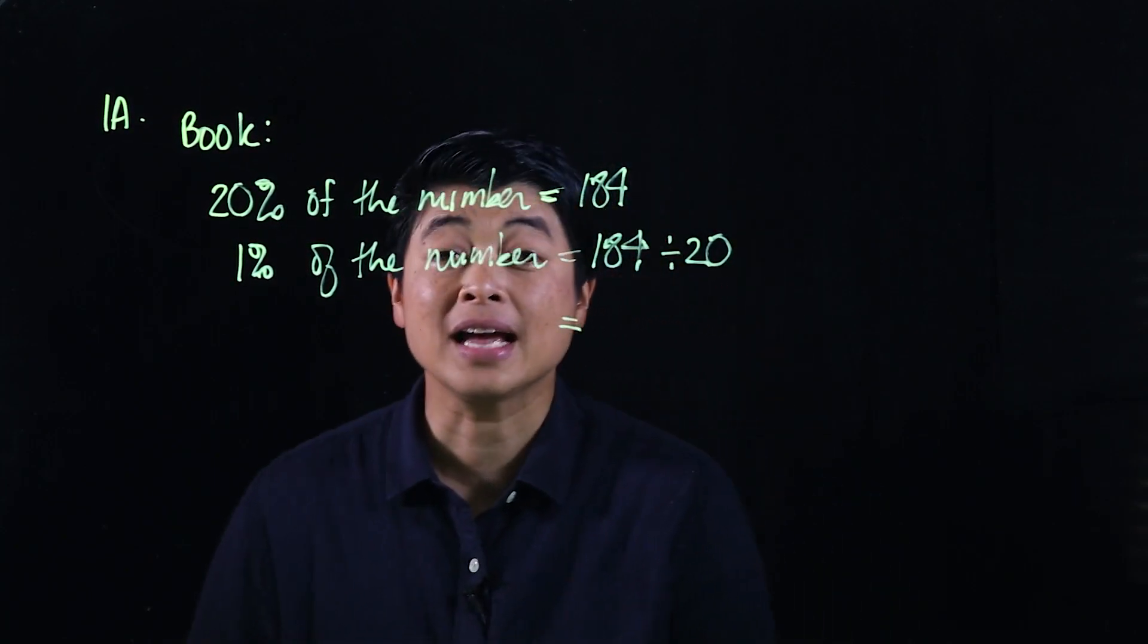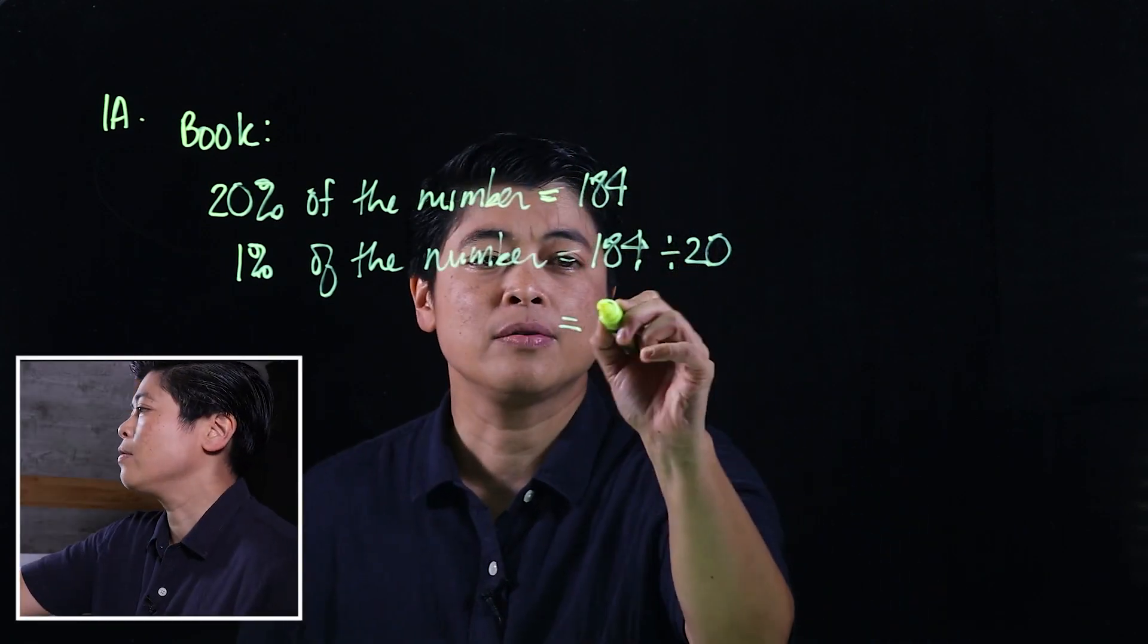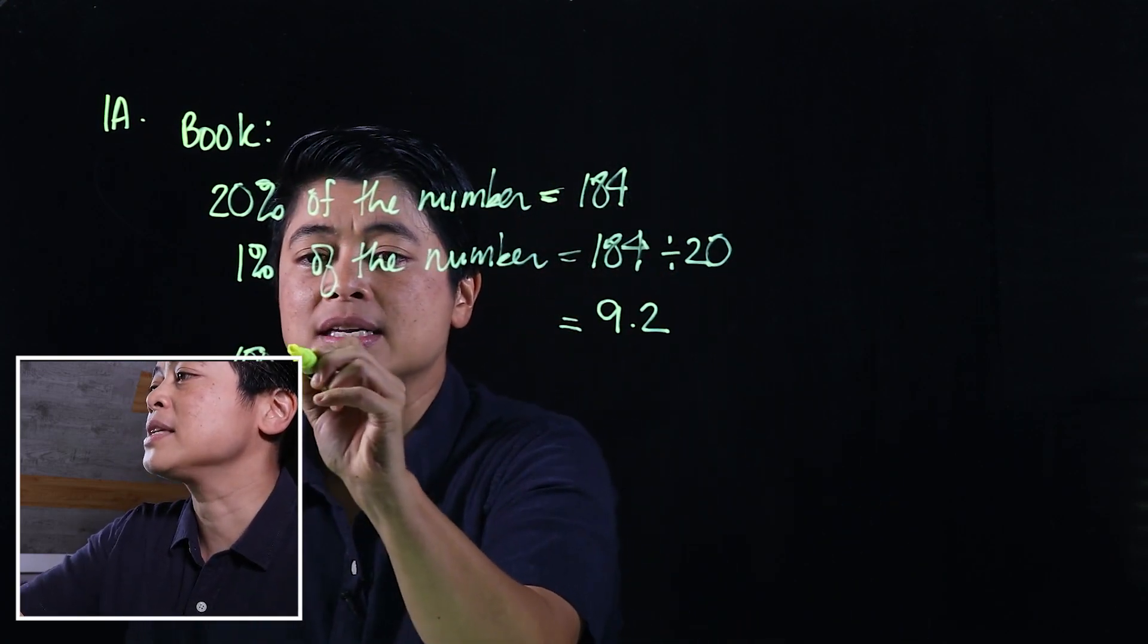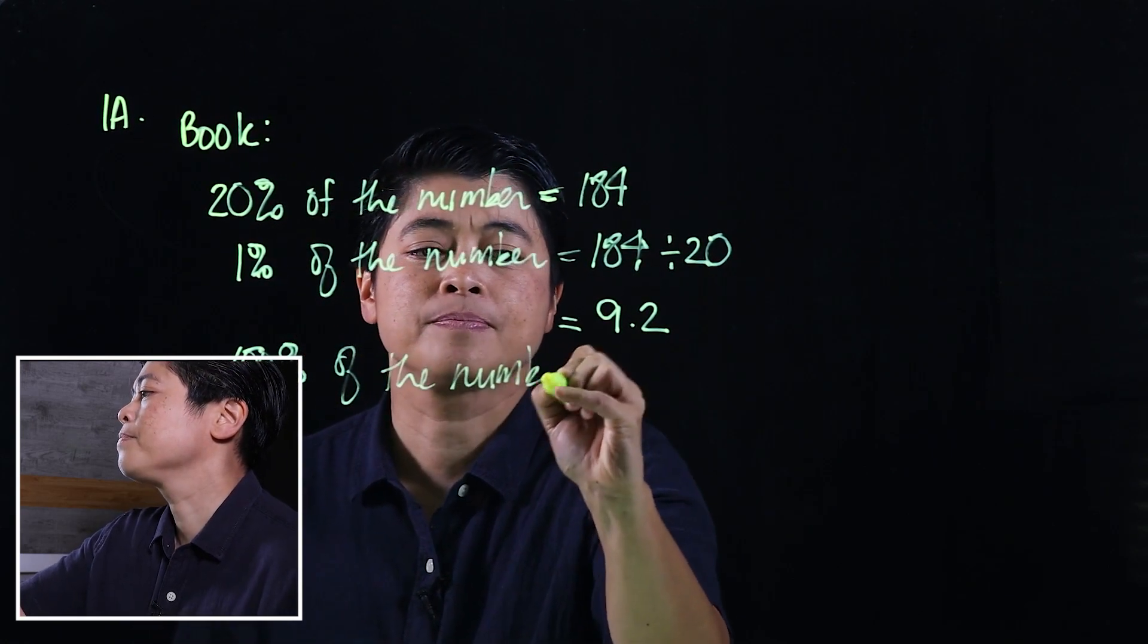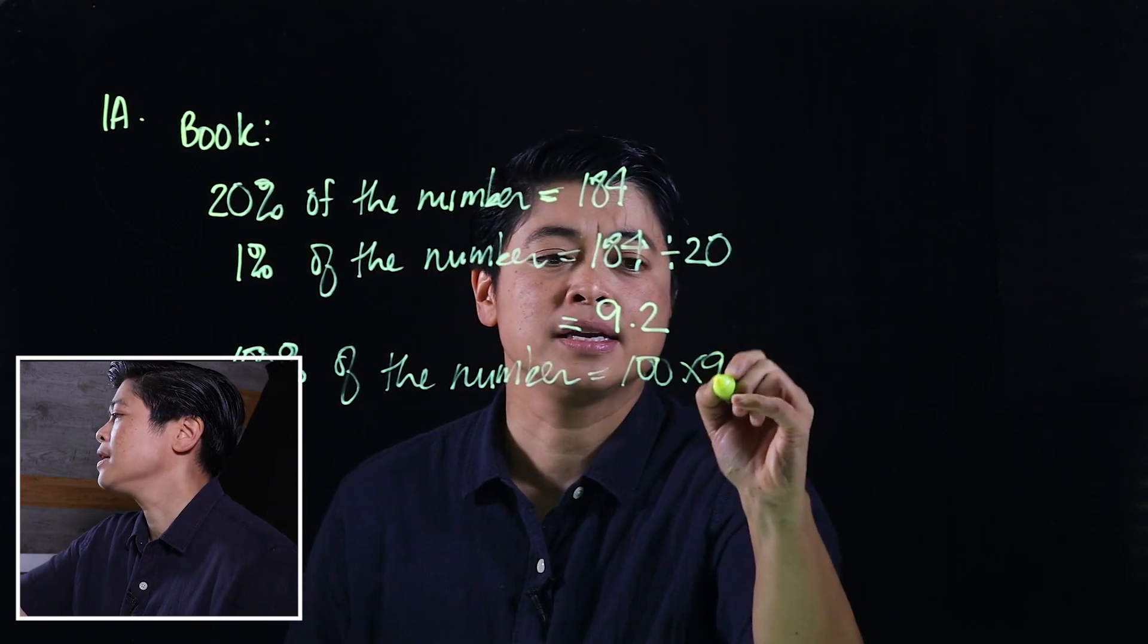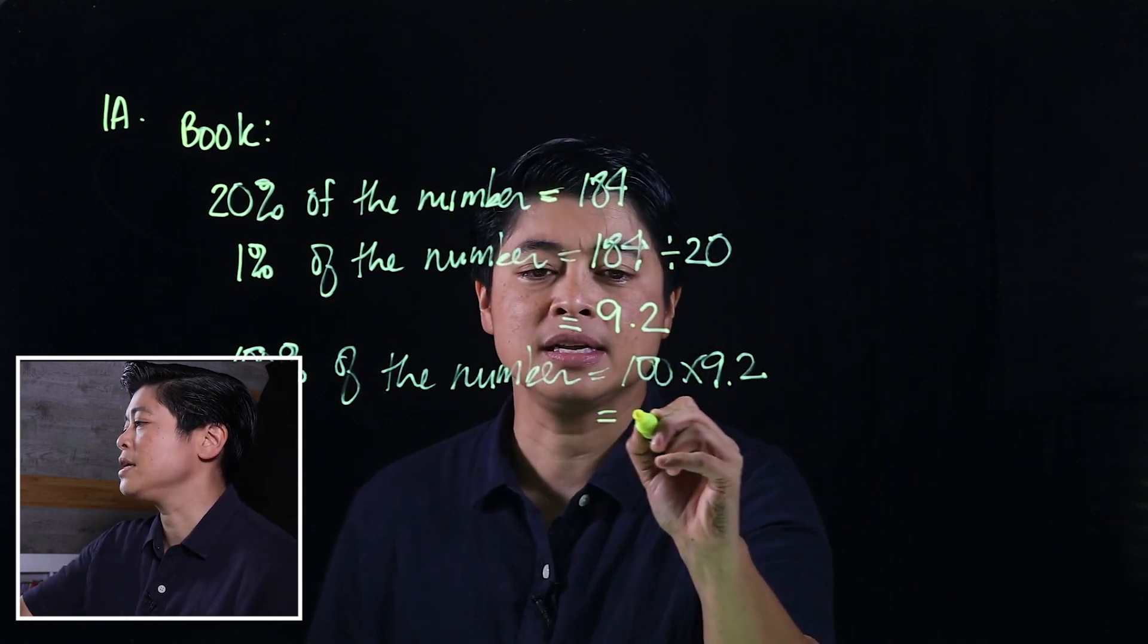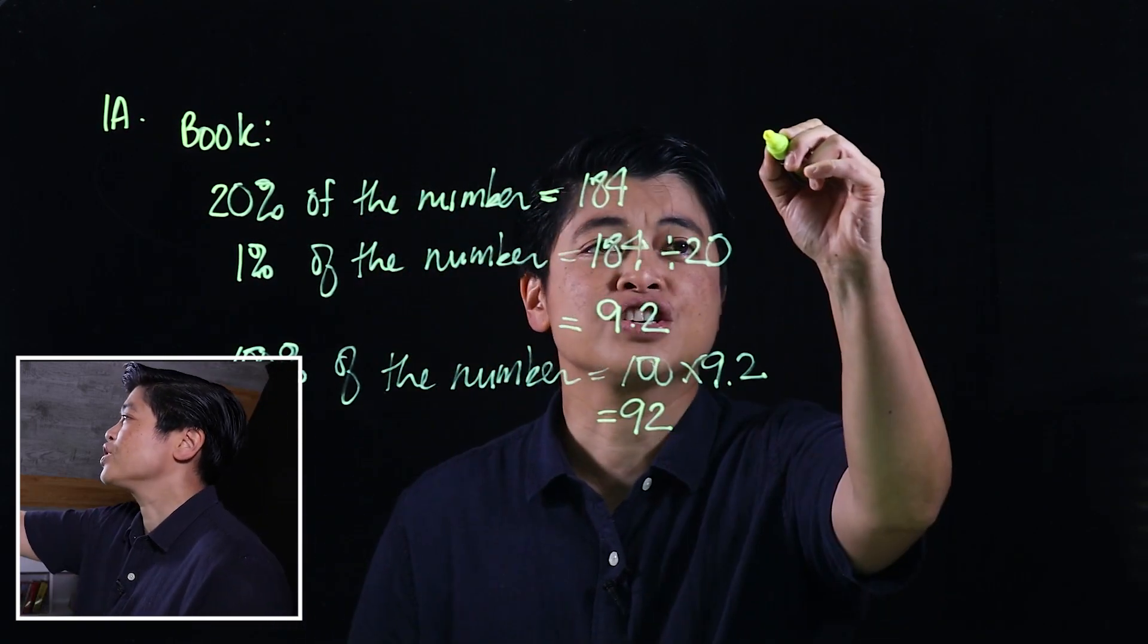When we divide that with a calculator, because the problem has a calculator, that will be 9.2. Which means if it asks for the number, that's the 100 percent of the number, which is 100 times 9.2, or vice versa because multiplication can be switched around. So that means this must be 920. Now that's the book.